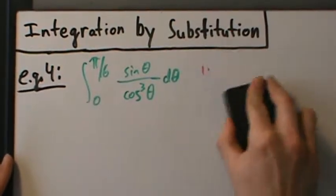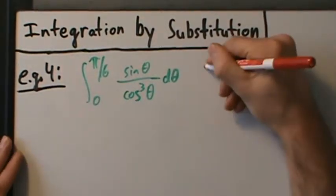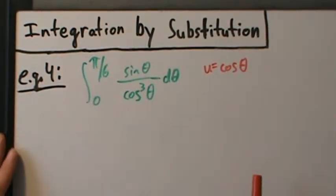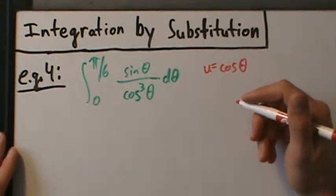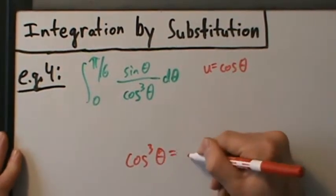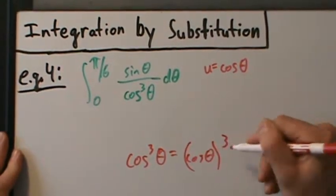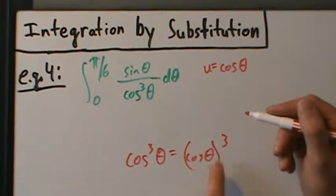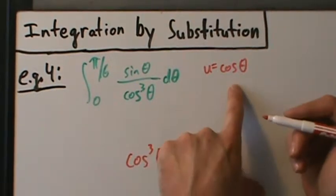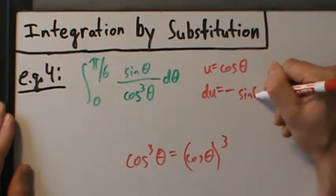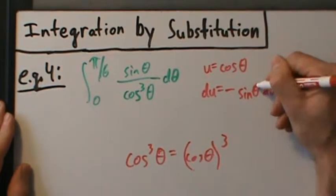So in that case, we'll try the other thing. u equals cosine of theta is what's really going to work here. Remember, look for a function and its derivative, or a constant multiple of its derivative. And if that doesn't work, look for the inside guy. Cosine cubed of theta equals cosine of theta, the whole thing cubed — so cosine of theta is sitting inside the cube function. That's the inside guy. So let's let u be the inside guy. Then du is negative sine of theta d theta.